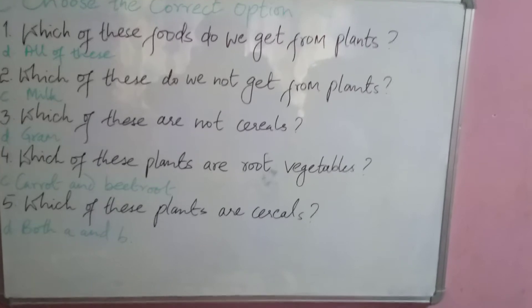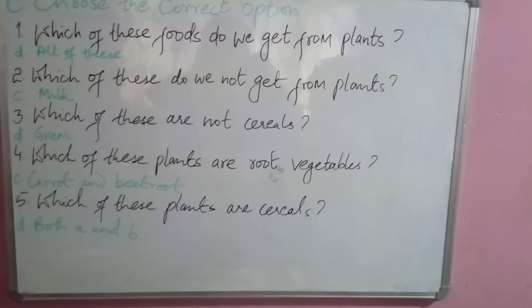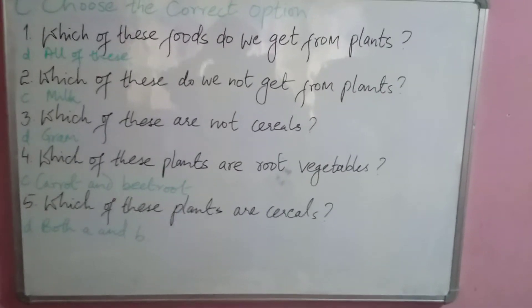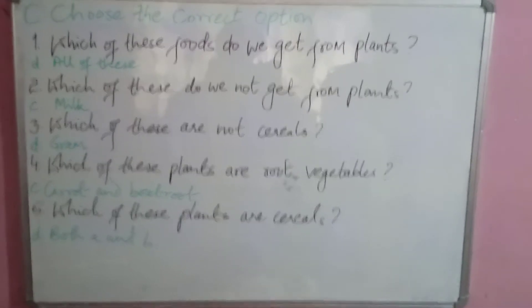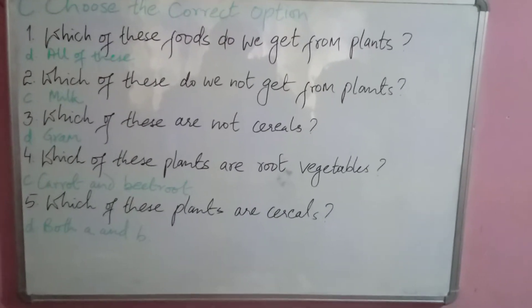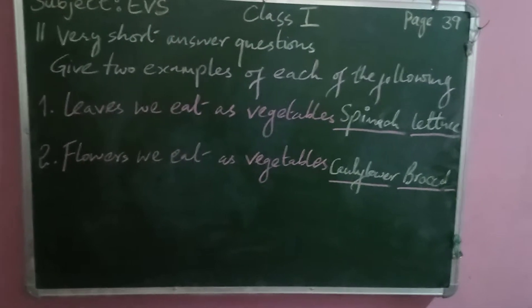Question five: which of these plants are cereals? The options are maize and corn, rice and wheat, gram and peas, and both A and B. Option D — both A and B — is your correct answer, which is maize, corn, rice, and wheat.